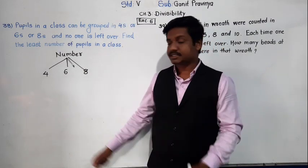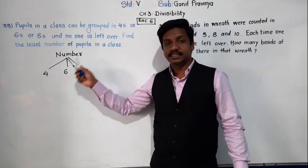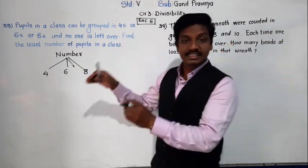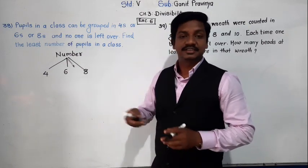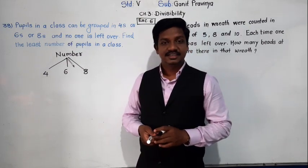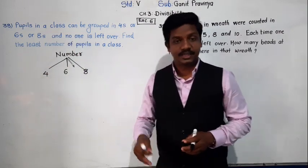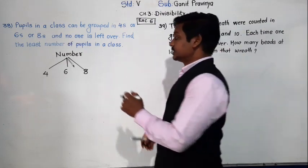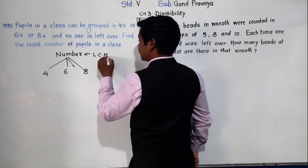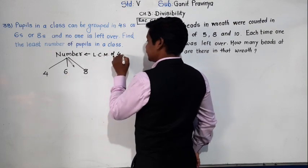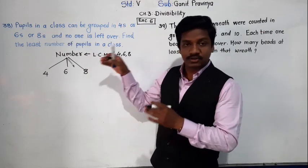It means after making a group of 4 students or 6 students or 8 students, no student is left. It is exactly a group of 4, 6 and 8. Such least number we have to find. We have to find a number which is divisible by 4, 6 and 8. It is nothing but LCM of 4, 6 and 8.